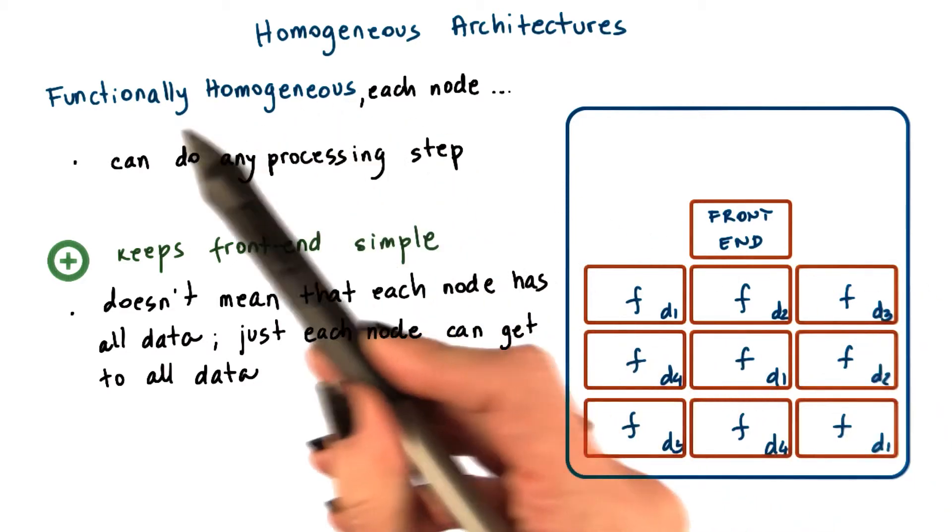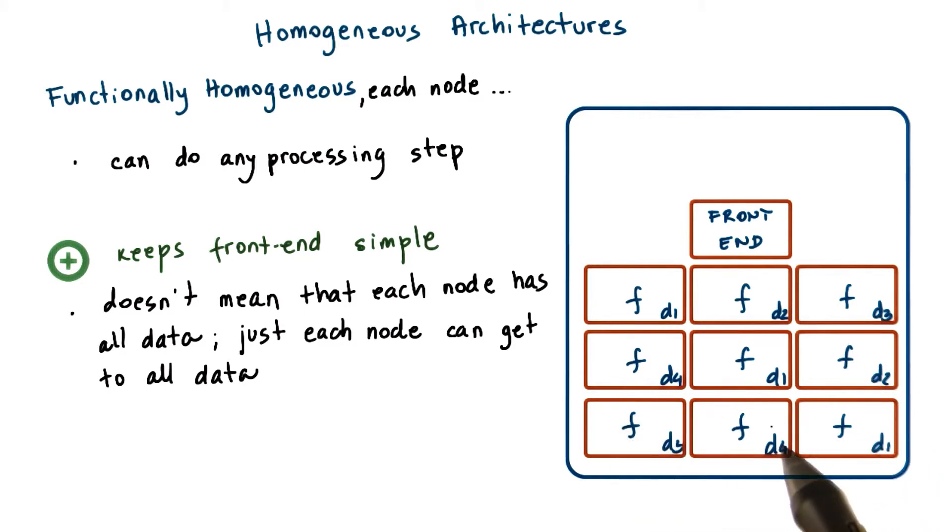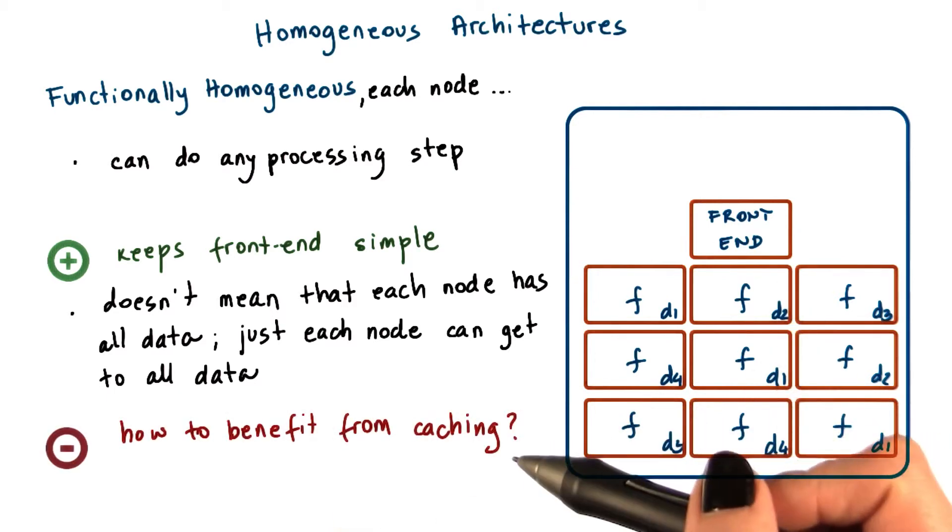But with the homogeneous design, every single one of the nodes knows how to get, how to access any type of information that may be necessary for the execution of the service.